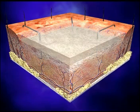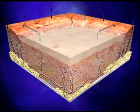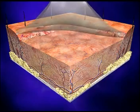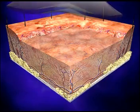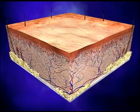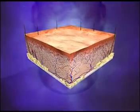Upon adequate vascularization of the neodermis at around 21 days, the silicone layer is removed, and a thin epidermal autograft approximately six thousandths of an inch is placed over the neodermis. Engraftment and epithelialization of the epidermis completes the healing process.